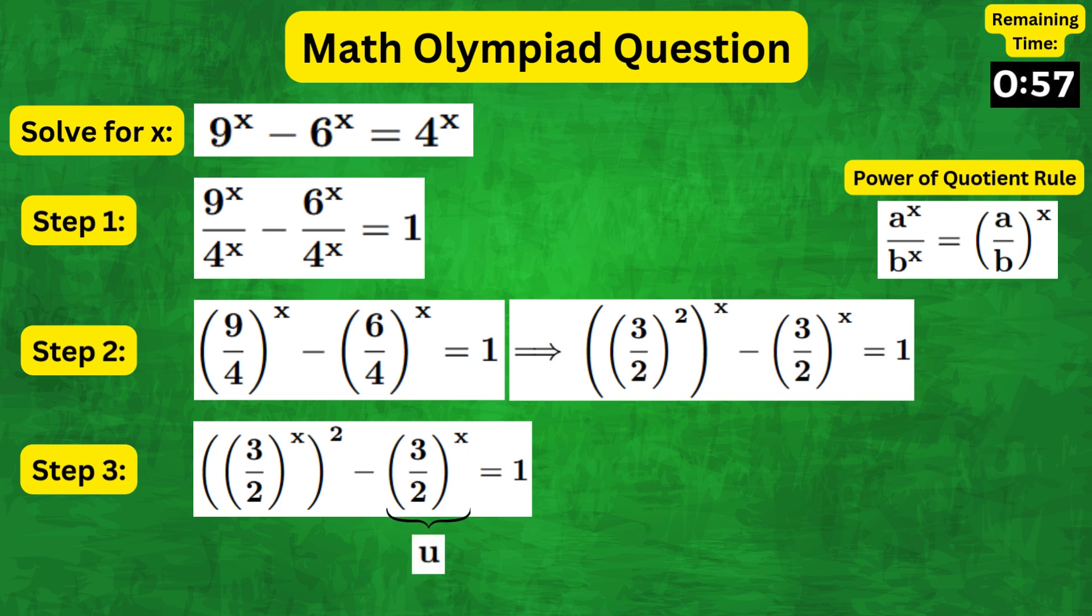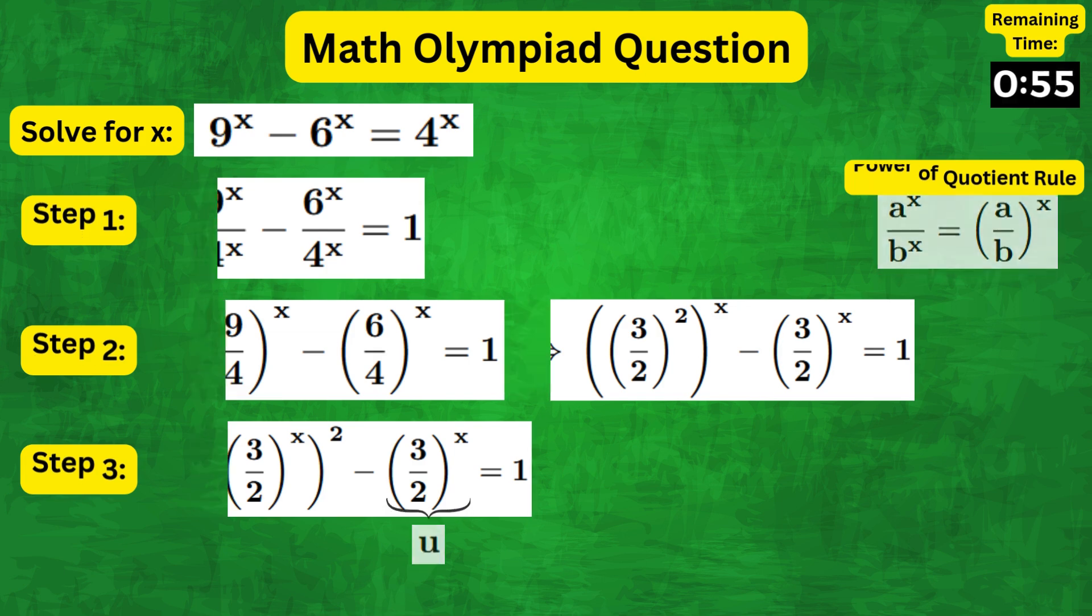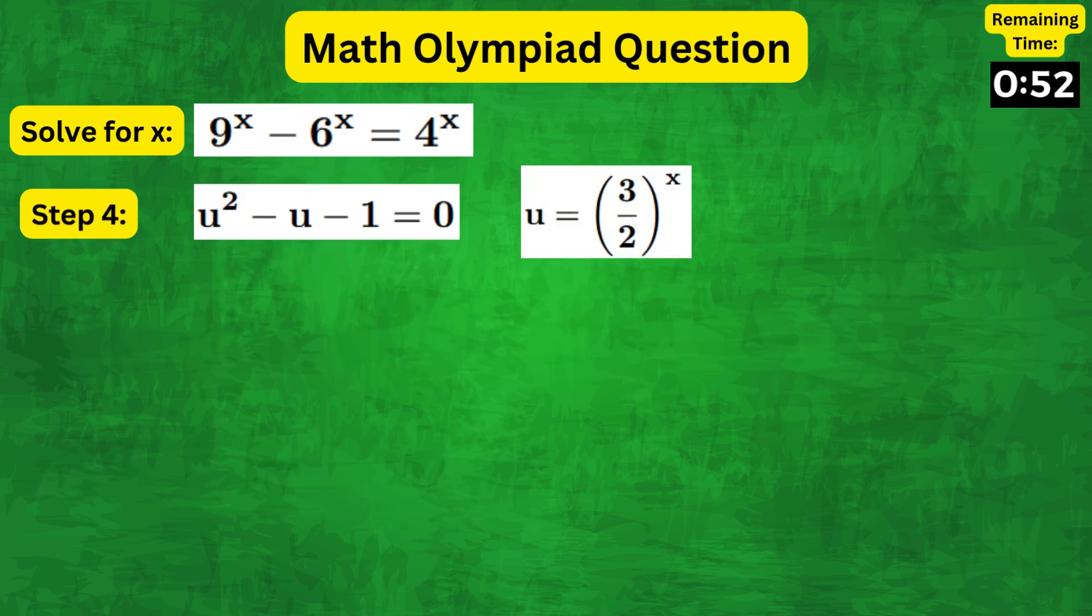Now setting u equals 3 over 2 to the x, we end up with a quadratic u squared minus u minus 1 equals 0.